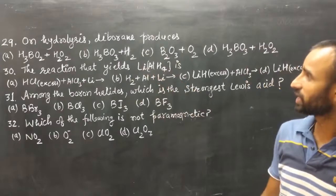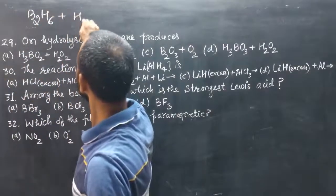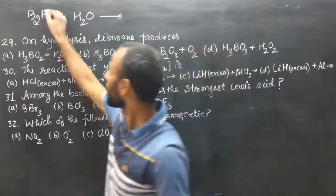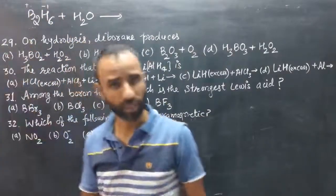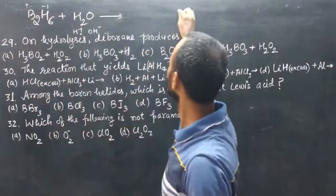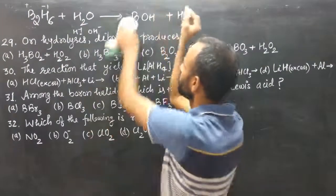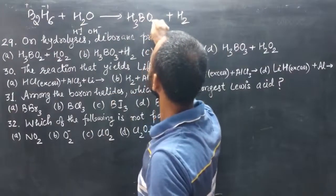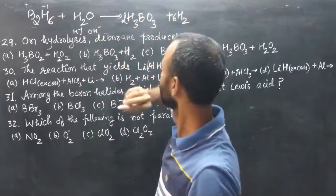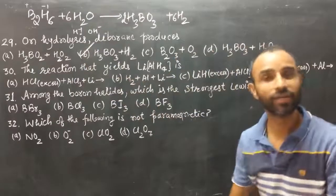Question 29: on hydrolysis, diborane (B2H6) produces what? In diborane, hydrogen is more electronegative than boron, so hydrogen is −1 and boron is +3. Water dissociates into H+ and OH−. H+ and H− combine to form H2, while B3+ and OH− give B(OH)3, which is H3BO3. So the products are 2 H3BO3 and 6 H2. The product formed is H3BO3 (boric acid) and H2.